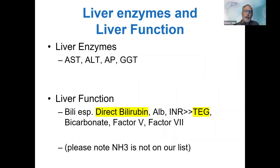As GI liver specialists, you should be fractionating any bilirubin greater than 0.7, diagnosing Gilbert if present. Of course, you're going to look at albumin and INR. Definitely make sure you have thromboelastography on your fulminant patients or liver failure patients. If you don't have TEG, remind me — we can start an initiative to get TEG into your hospital. That is the state-of-the-art for coagulation assessment in a liver patient. Bicarbonate is a liver function test, as are factor V and factor VII, which have short half-lives and are quite useful in assessing for liver failure.